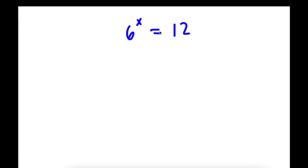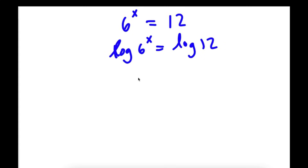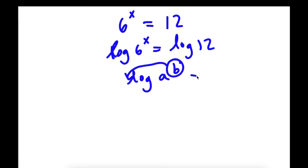The first thing I'm going to do is take the log on both sides. So I have log 6 to the power of x is equal to log 12. Now an important property of logarithms is that if we have log a to the power of b, we can actually move this exponent b to the front of the logarithm. So this is going to be equal to b times log a.